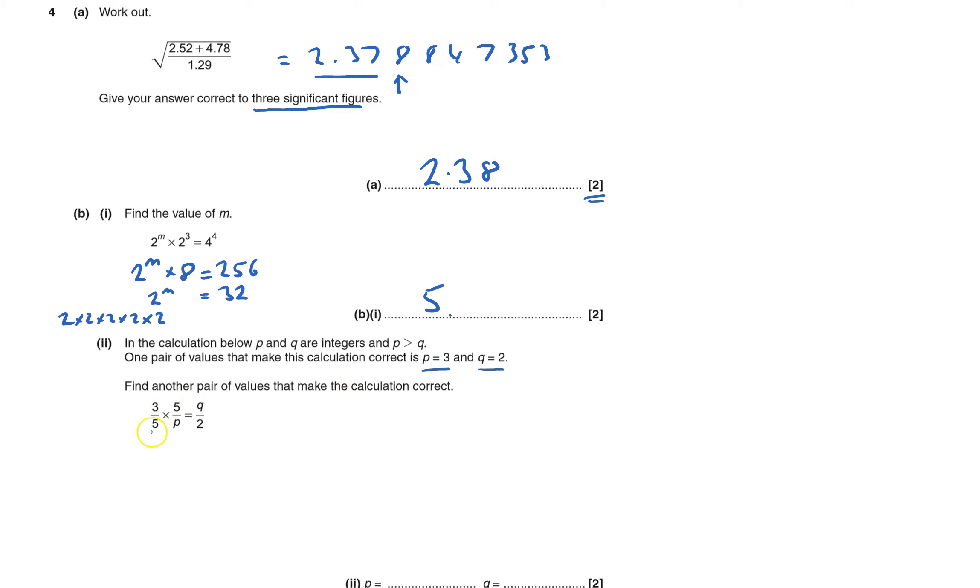Find another pair, well, times in fractions together. Then this on the left hand side is 3 times 5. And on the top is 3 times 5 off the left. And the bottom is going to be p times 5. And that's got to equal q over 2.